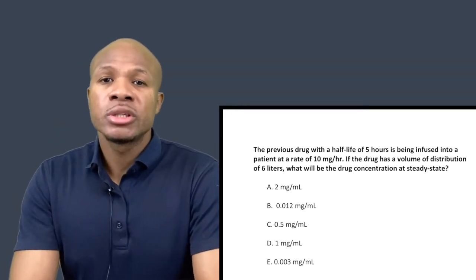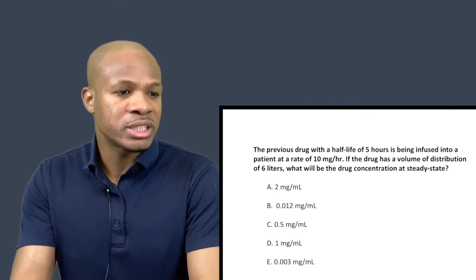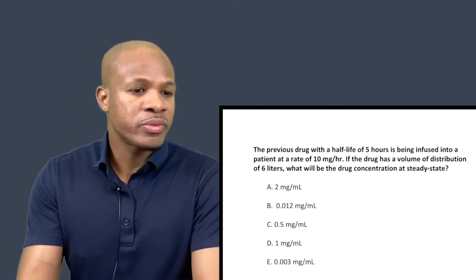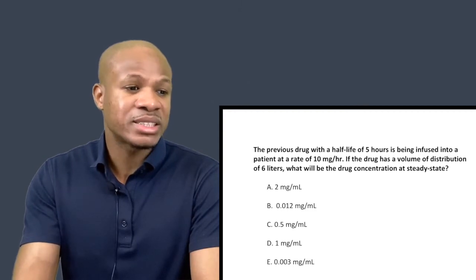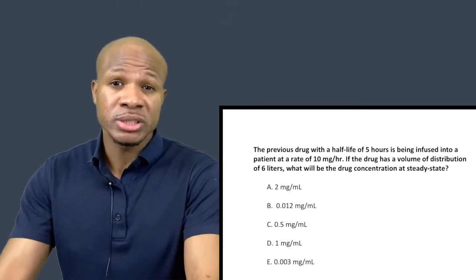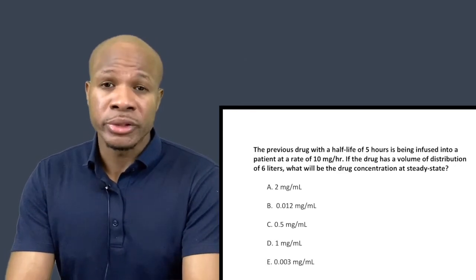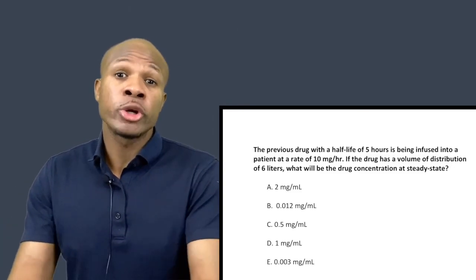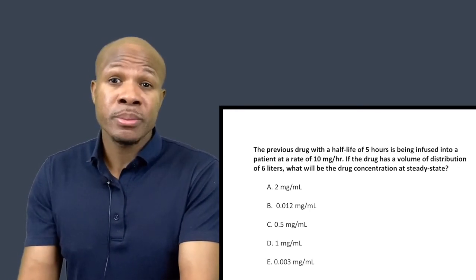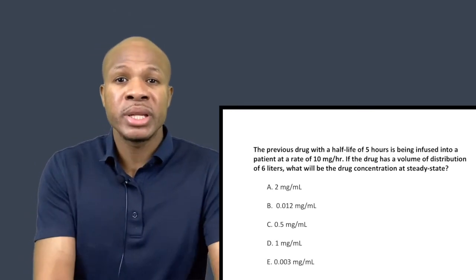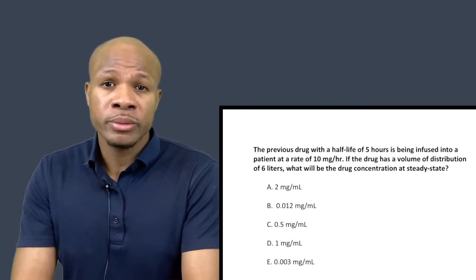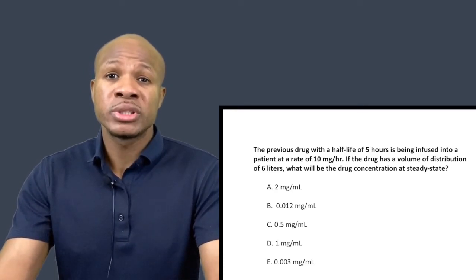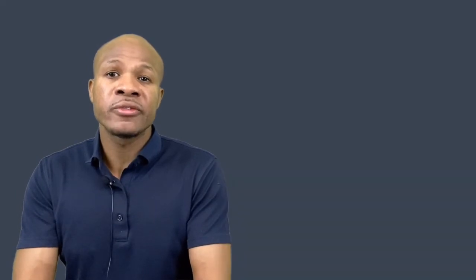Let's move on to question number two. The previous drug with a half-life of five hours is being infused into a patient at a rate of 10 milligrams per hour. If the drug has a volume of distribution of six liters, what will be the drug concentration at steady state? As this drug is infused, it accumulates in the body while simultaneously being eliminated. There will be a concentration where the rate of infusion and rate of elimination are equal — that's the steady state concentration.